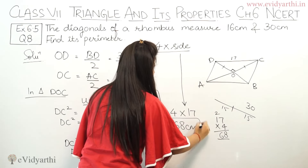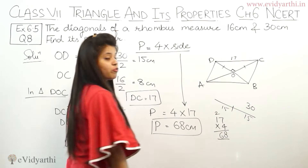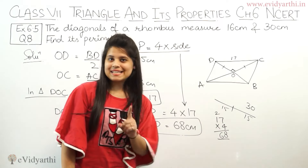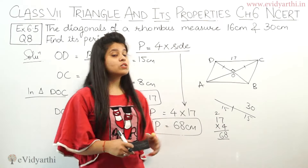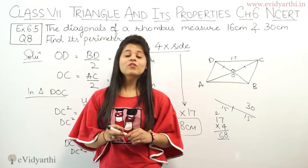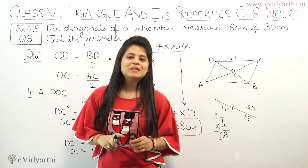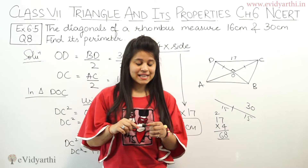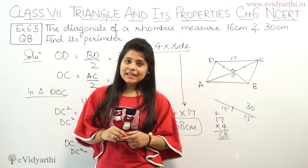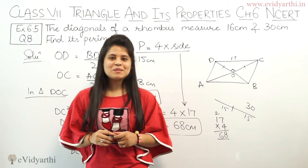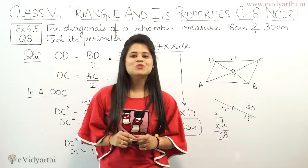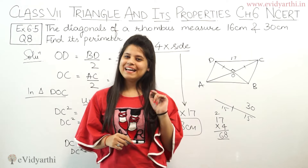So the perimeter of the rhombus is 68 cm. This was the last question of exercise 6.5. With this, we complete our exercise and chapter number 6. If you have any doubt, you can mention it in the comments. Also do subscribe to our channel. Bye-bye.